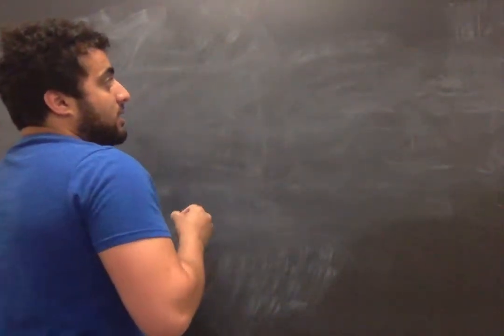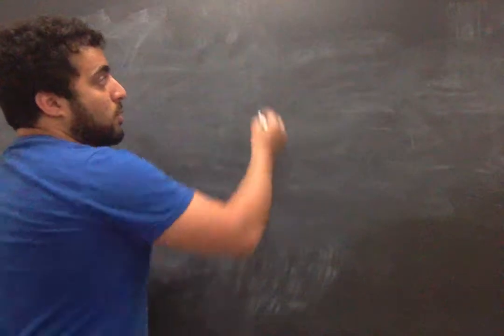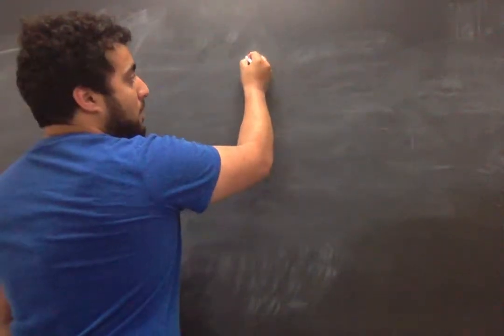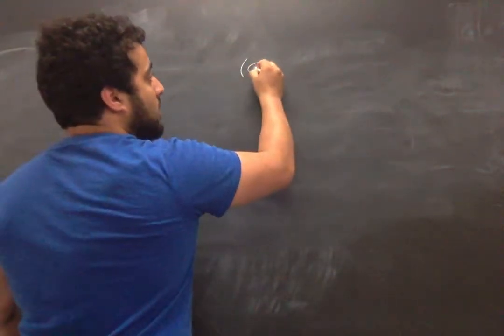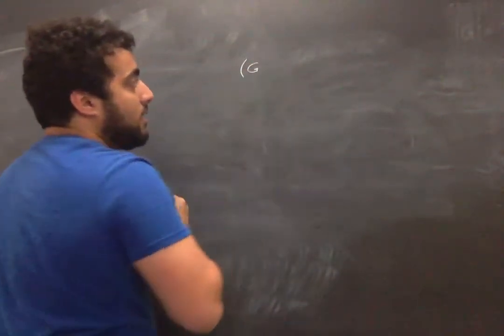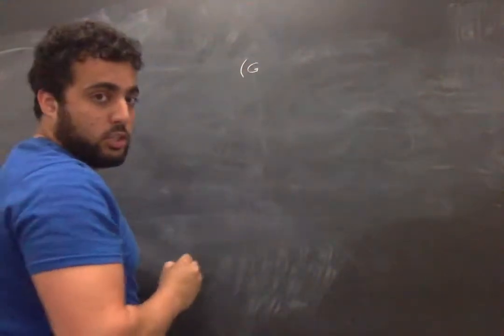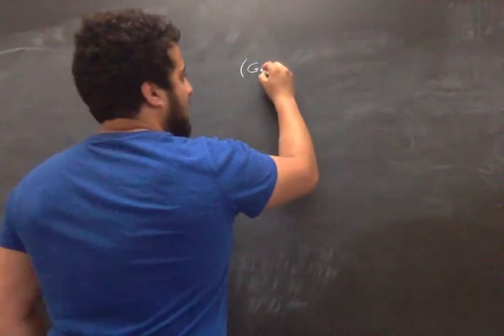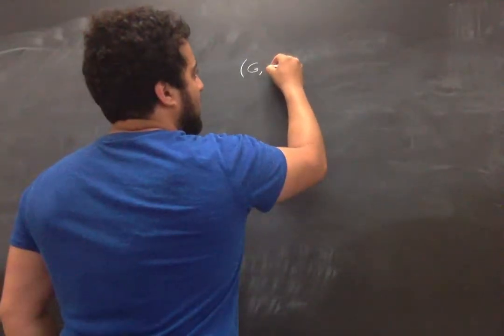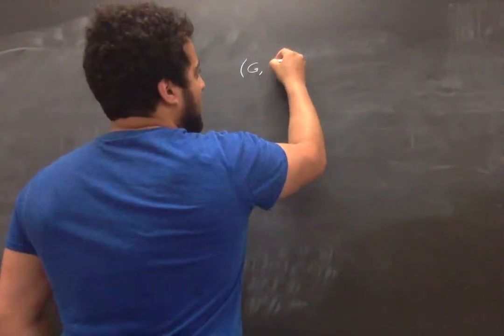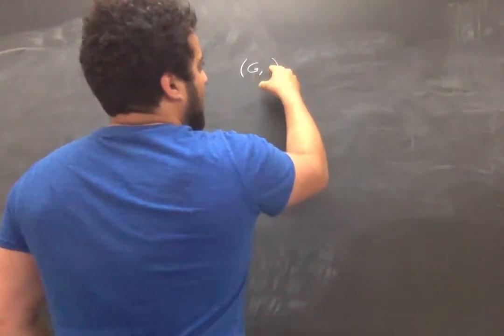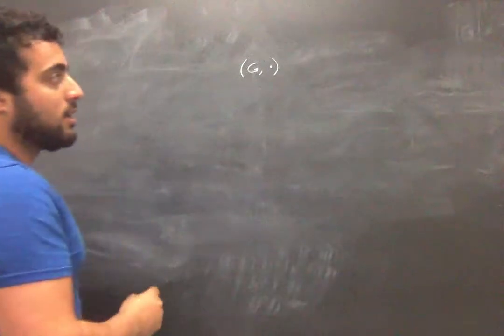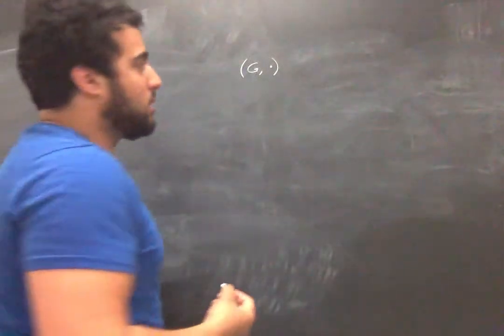So first thing is: what is a group? Well, a group is a combination of two things. You have some set of elements, which we'll call G, and you have some binary operation on this set, which we'll denote for now as just a dot, kind of like a multiplication symbol.